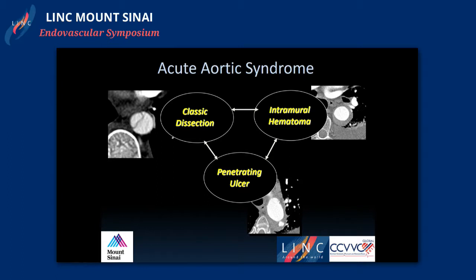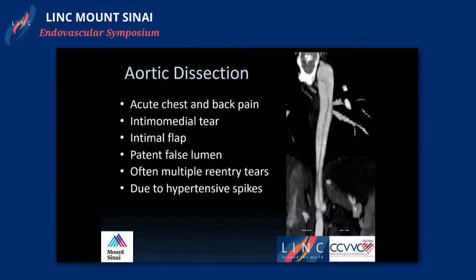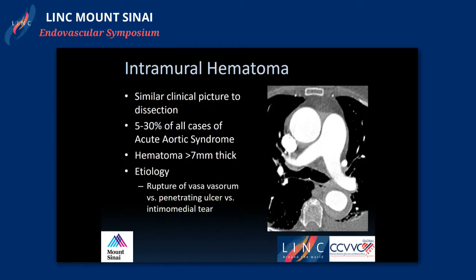Penetrating aortic ulcers belong to the whole category of acute aortic syndrome, along with classic dissection — that's the true and false lumen with the intimal flap — intramural hematoma, in which there's thrombosed blood within the wall of the aorta itself, and then penetrating aortic ulcer. Aortic dissection presents with acute chest and back pain, thought to be due to an intimal medial tear generating an intimal flap resulting in a patent false lumen, which often has multiple reentry sites that can pressurize the lumen and cause renal, visceral, and lower extremity malperfusion, due to hypertension which is the main cause.